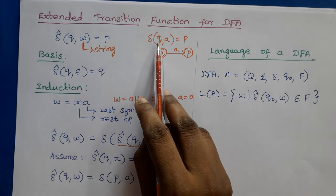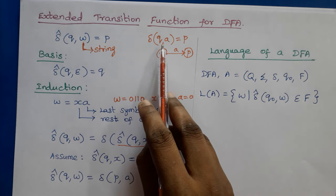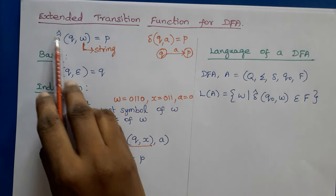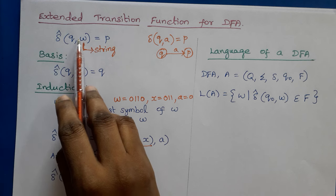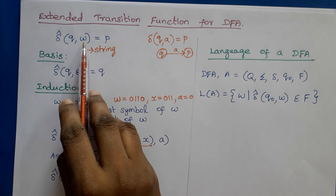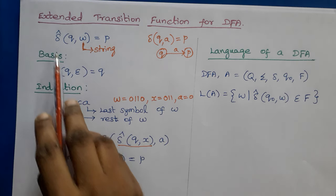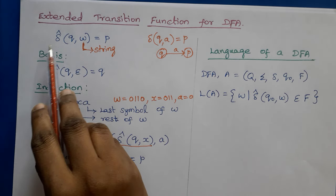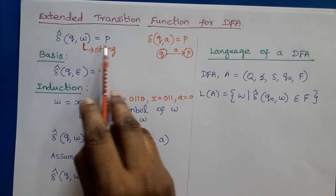The transition function is defined for a single input symbol. The extended transition function is represented by delta-cap. Here, the second argument is a string rather than a single symbol. So the extended transition function is defined for a string, written as delta-cap(Q, W) = P.